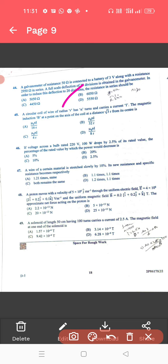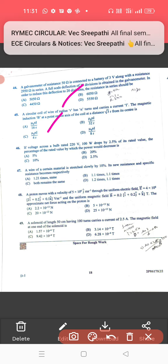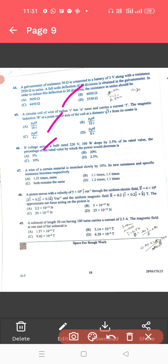45, a circular coil. For circular coil, it is mu naught ni by 16, 6 is a correct answer. 46, if a voltage across the bulb. For 46, the correct answer is 5%.